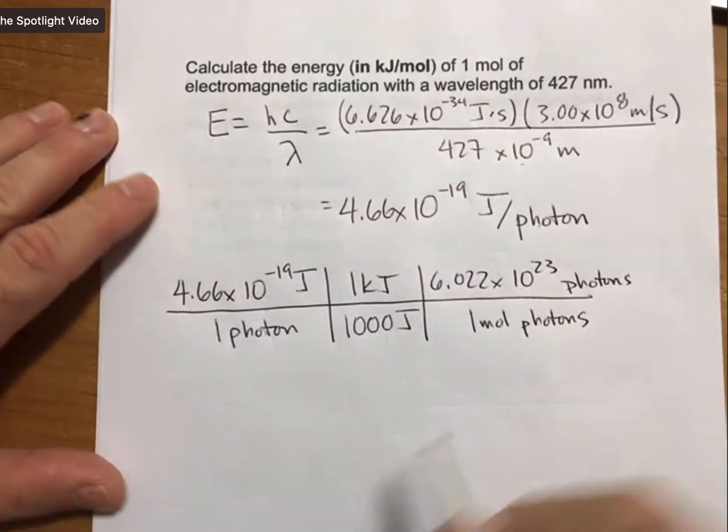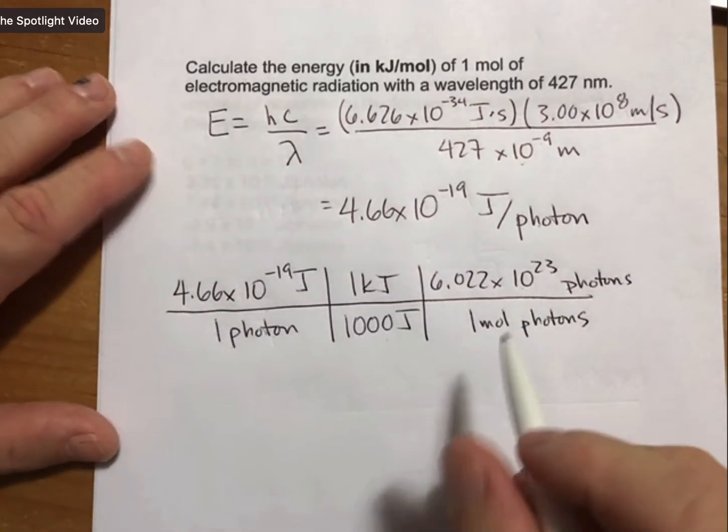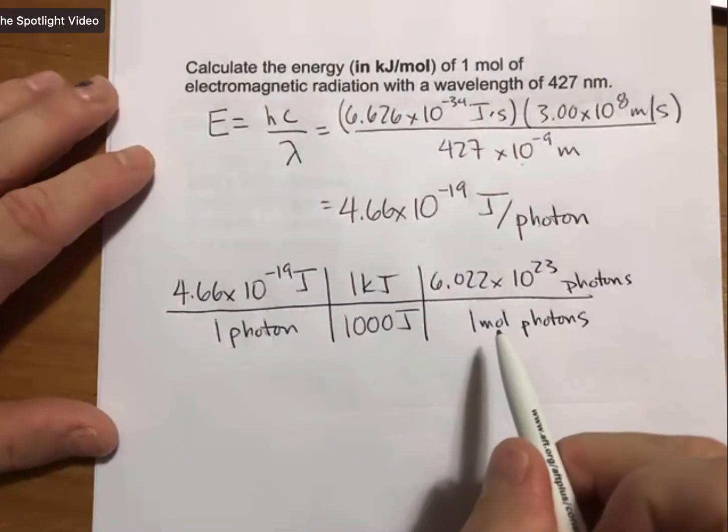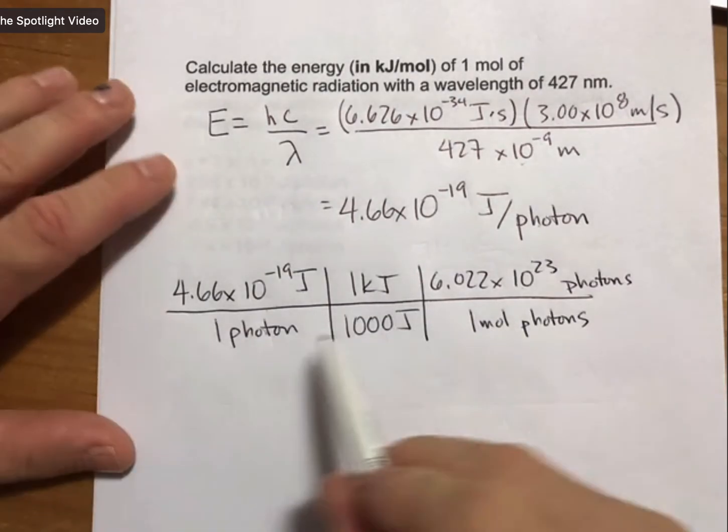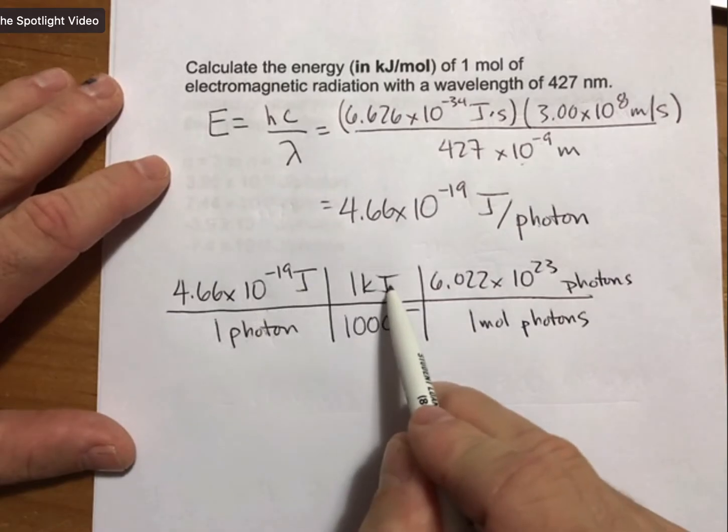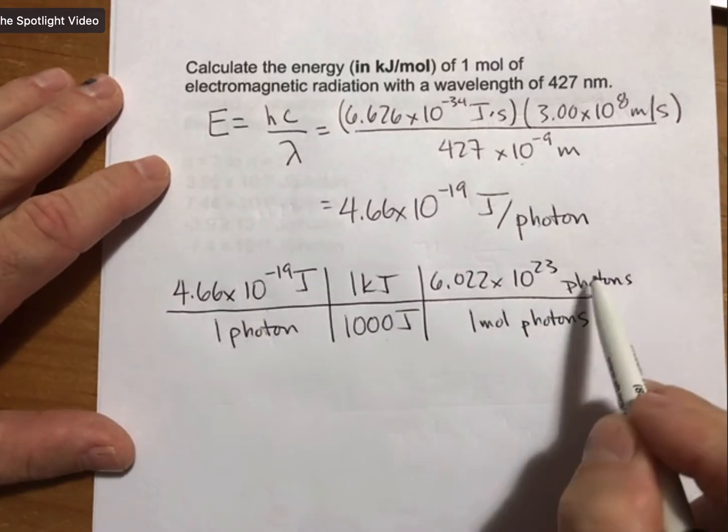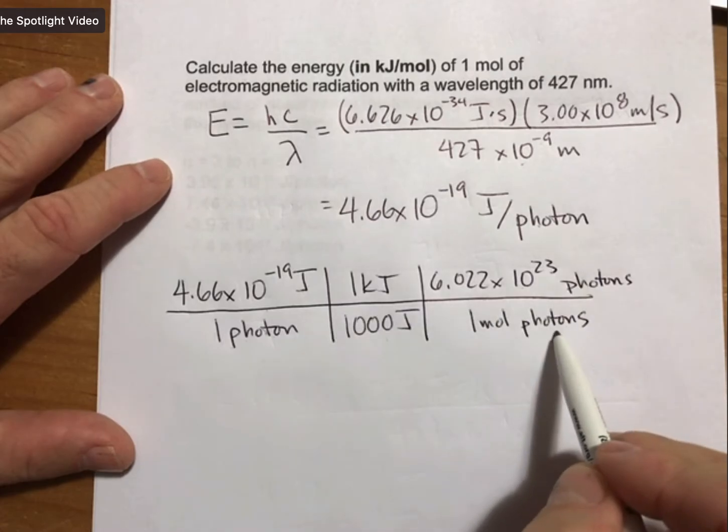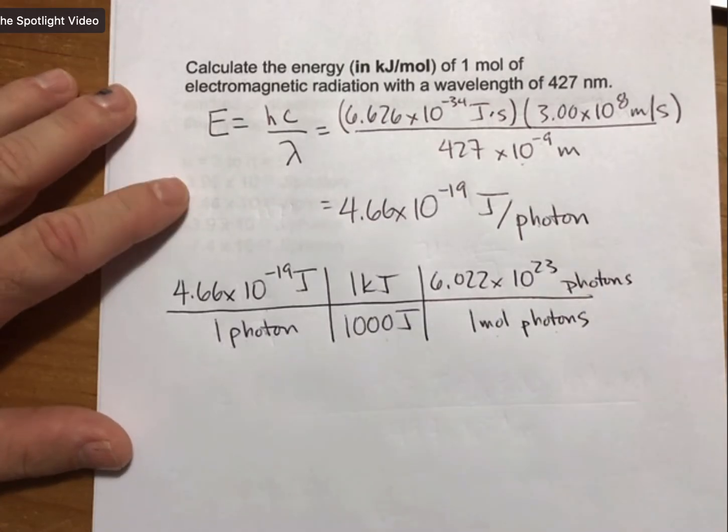And we'll be doing this kind of calculation a number of times in this week's homework. Now let's see. I cancel out my joules. I have kilojoules. I cancel out my units of photons and I'm left with moles, specifically moles of photons.